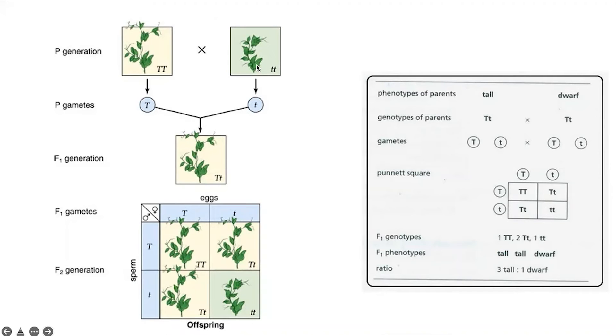Now, in his primary cross called as a monohybrid cross, he took these true breeding tall plants and he took the true breeding dwarf plants and he crossed them together. And in the next generation, he found that all plants were tall. There was no sign of any dwarf plant.